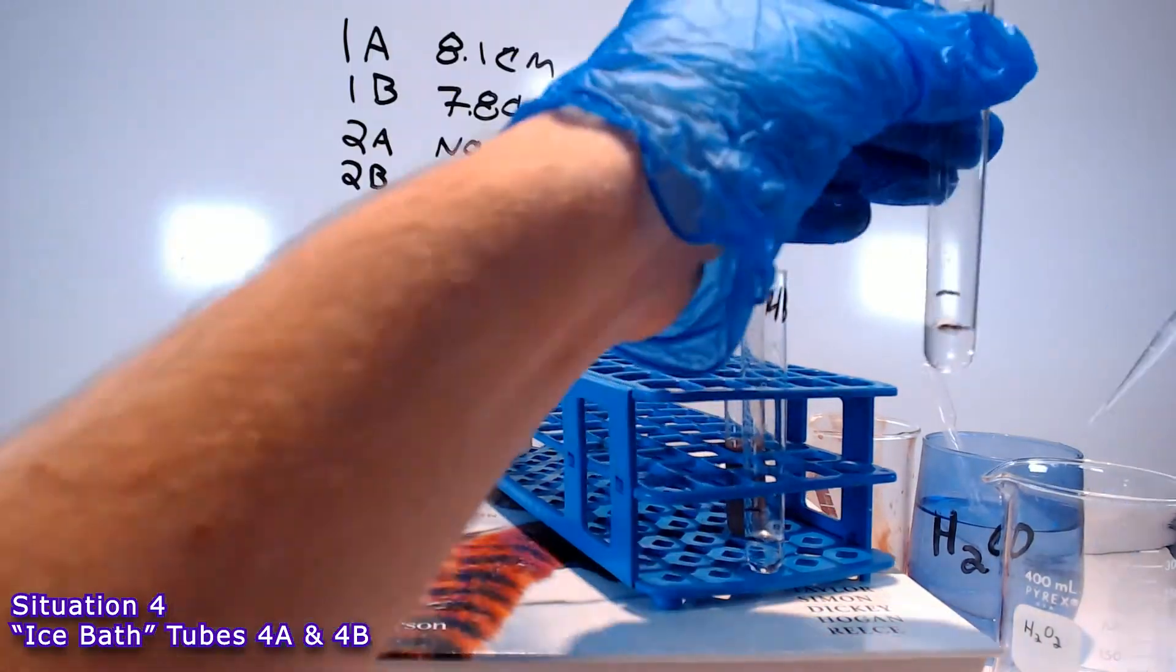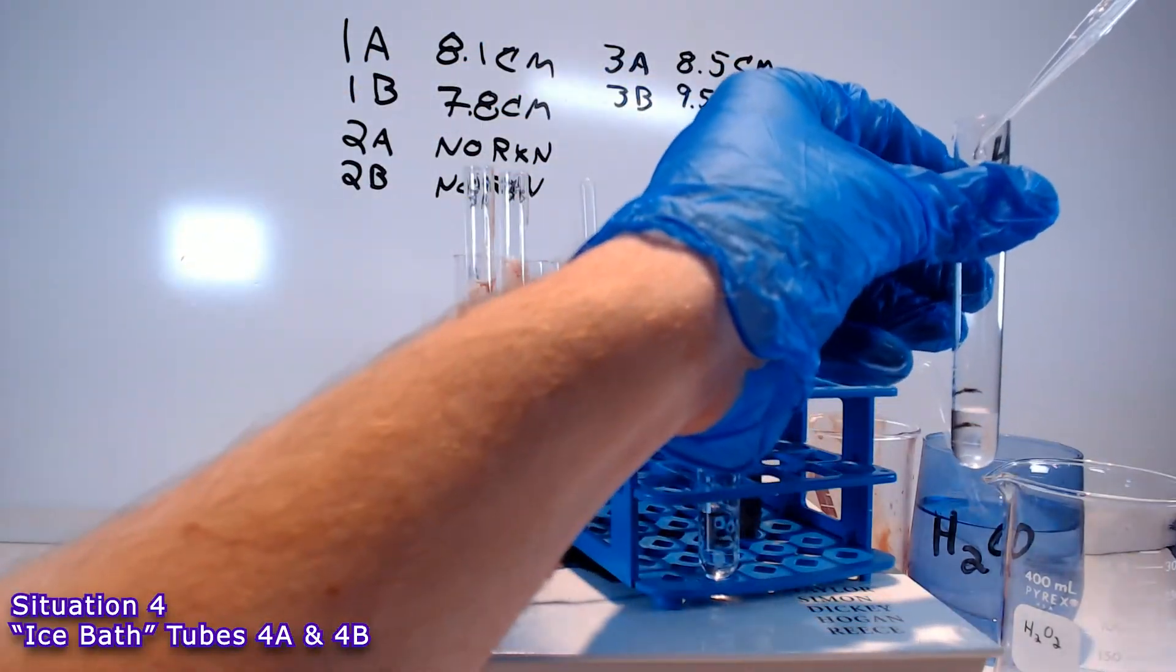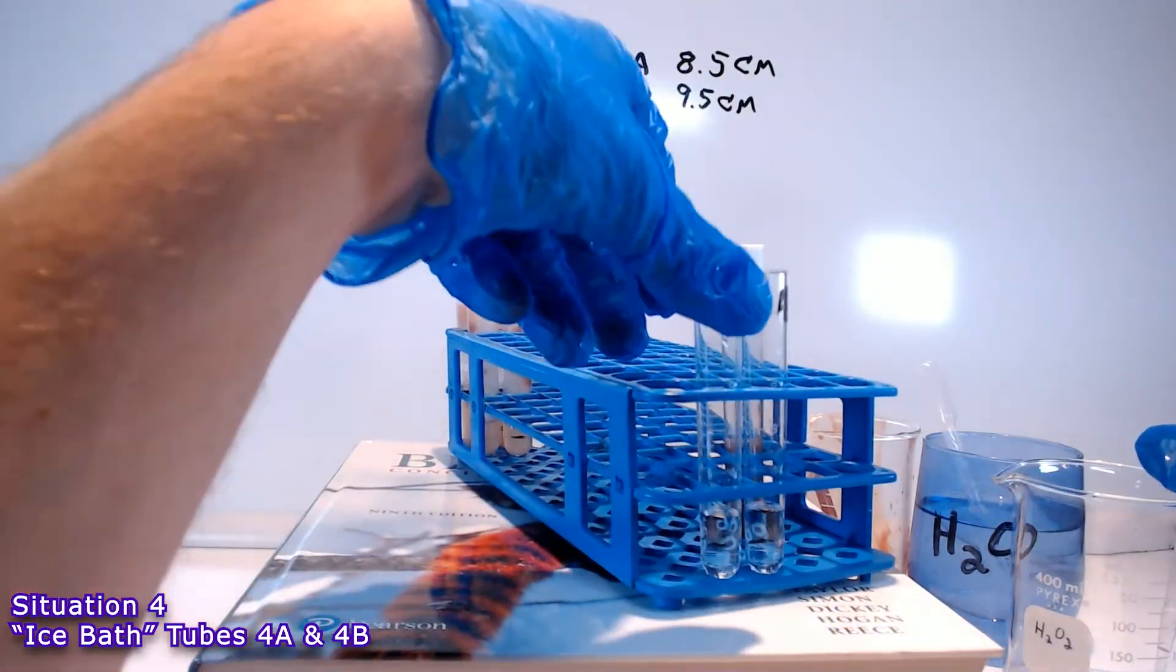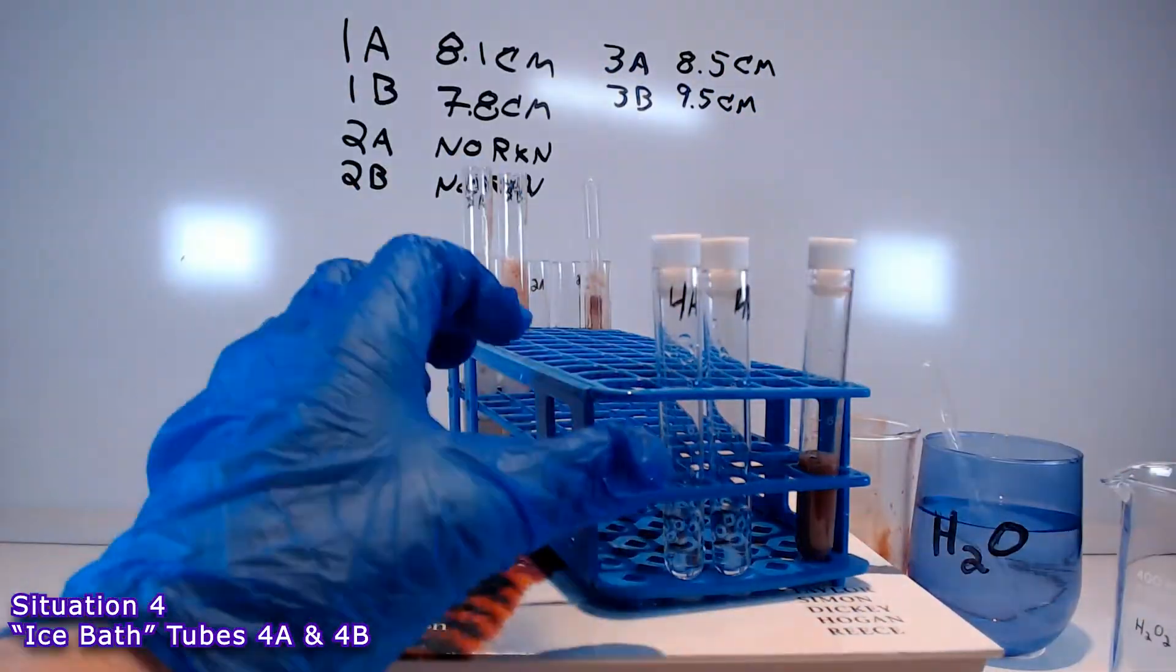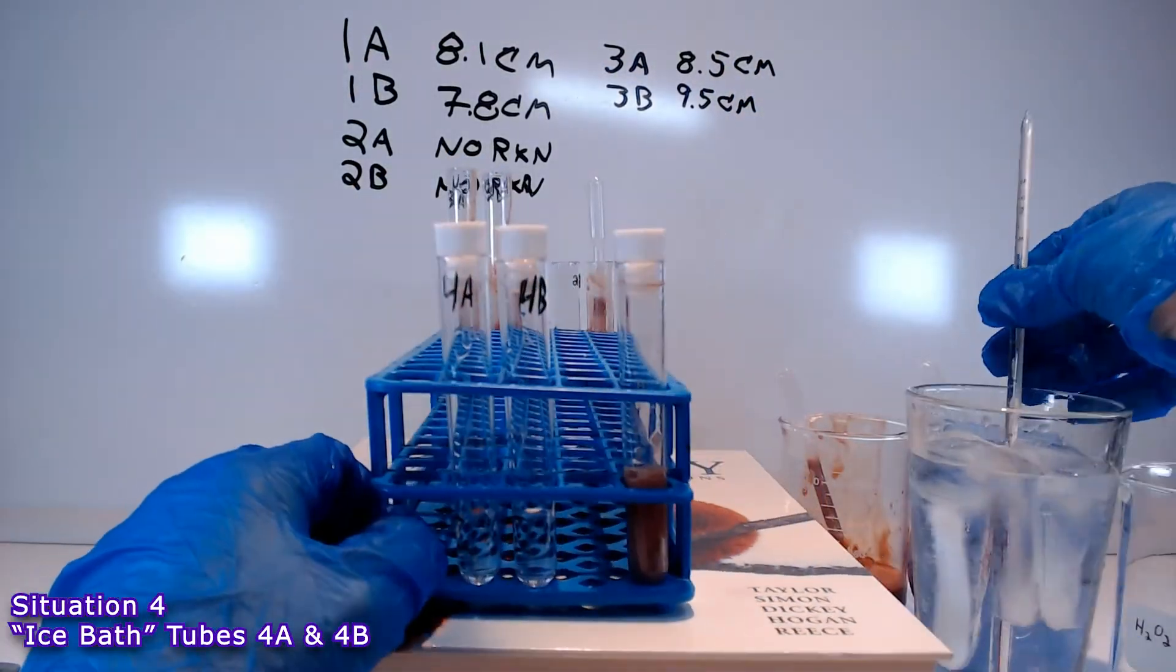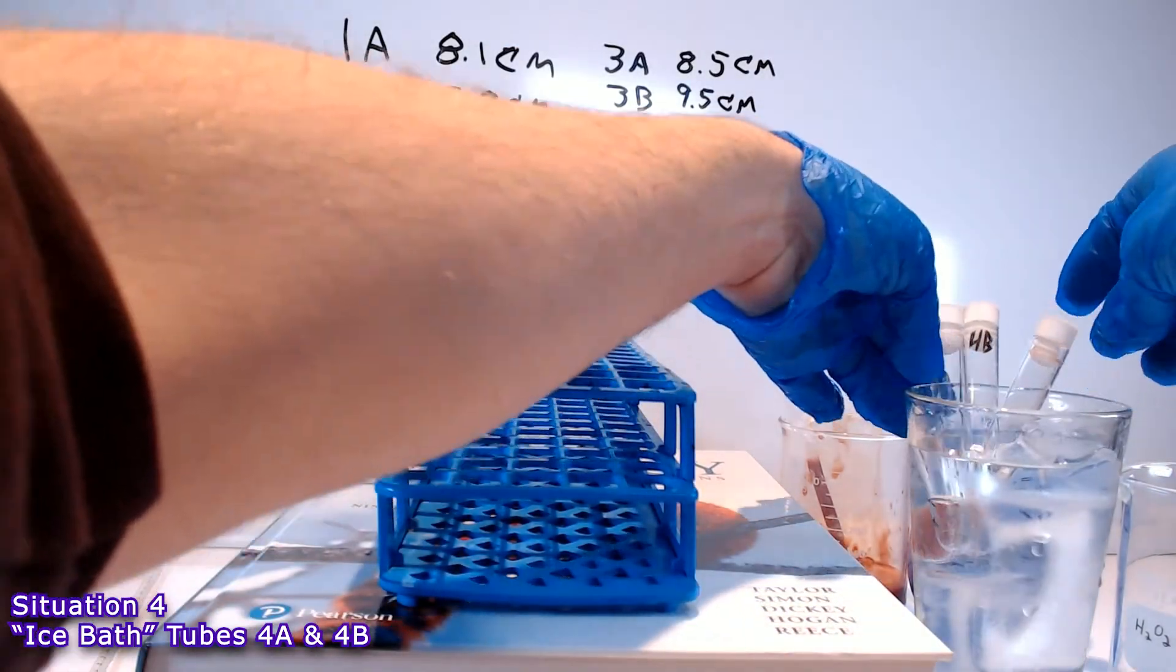In situation 4, we're going the opposite direction. We're going to create a cold environment by putting these tubes on ice. So, once again, this is water and hydrogen peroxide in the tubes. We're going to take tubes 4A and 4B and a sample of the liver homogenate. We're going to put it on ice. After 5 minutes, they have been chilled down adequately.